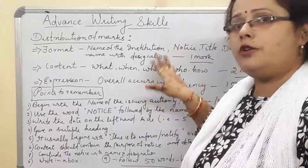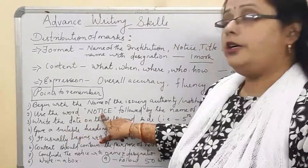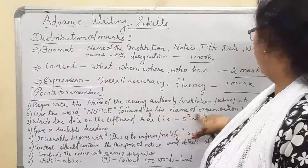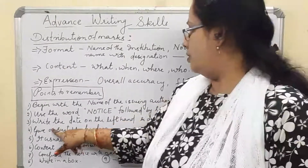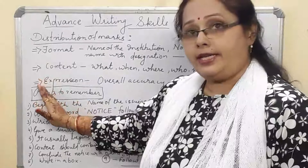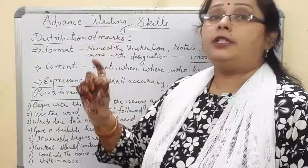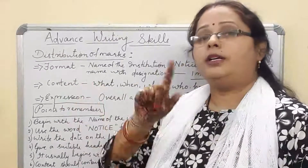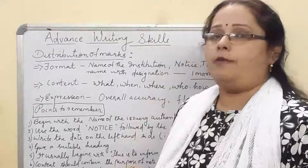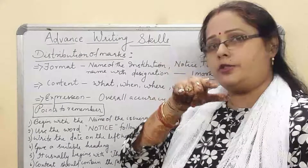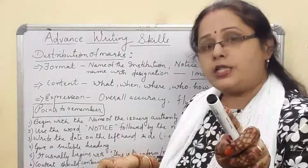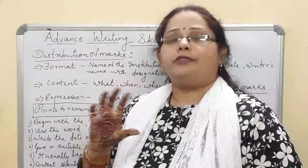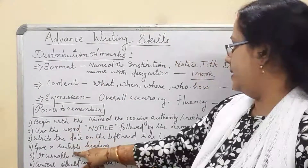Points to remember: begin with the name of the issuing authority or organization. Write the word 'NOTICE' in capital block letters, followed by the name of the institution. On the left-hand side, write the date — the format is '5th November, 20XX'. Writing '2020' is wrong. Maintain the format: '5th November, 20XX'.